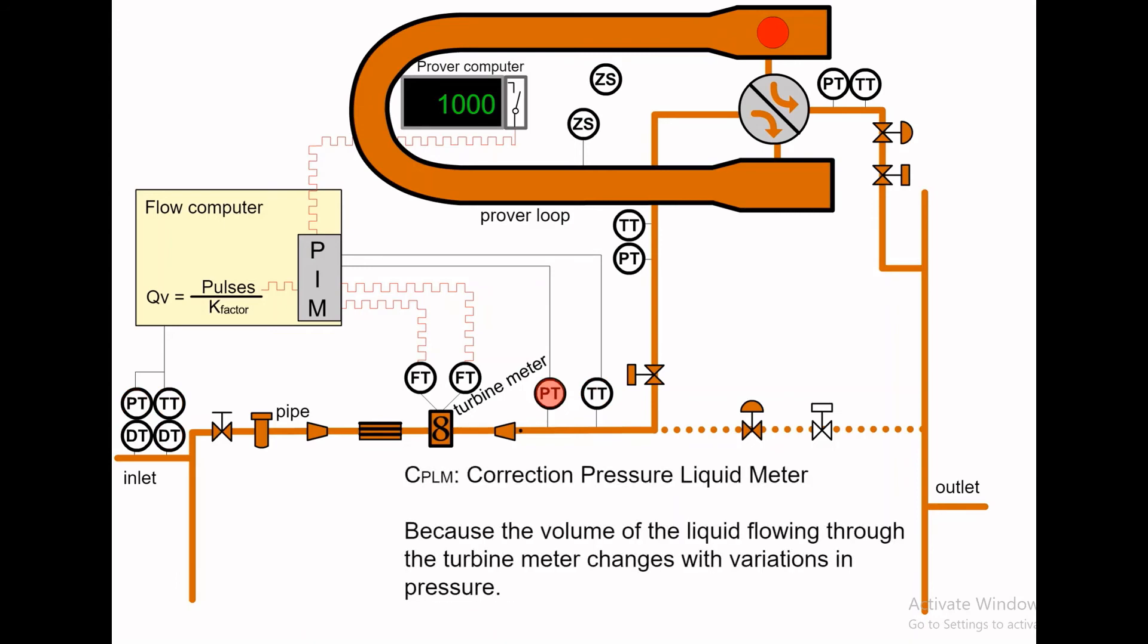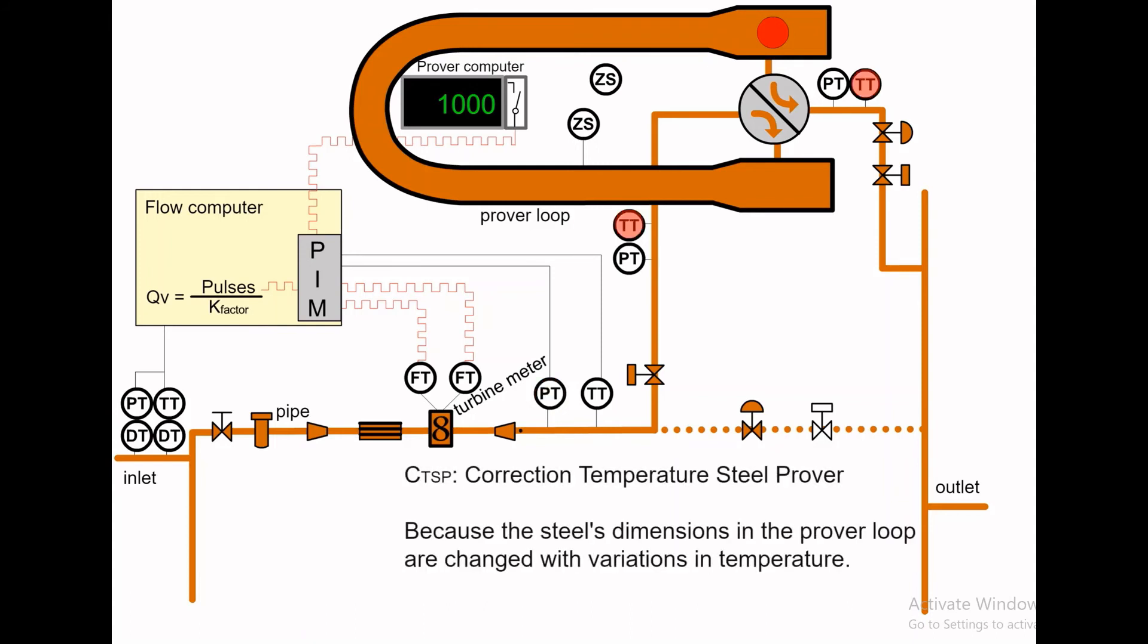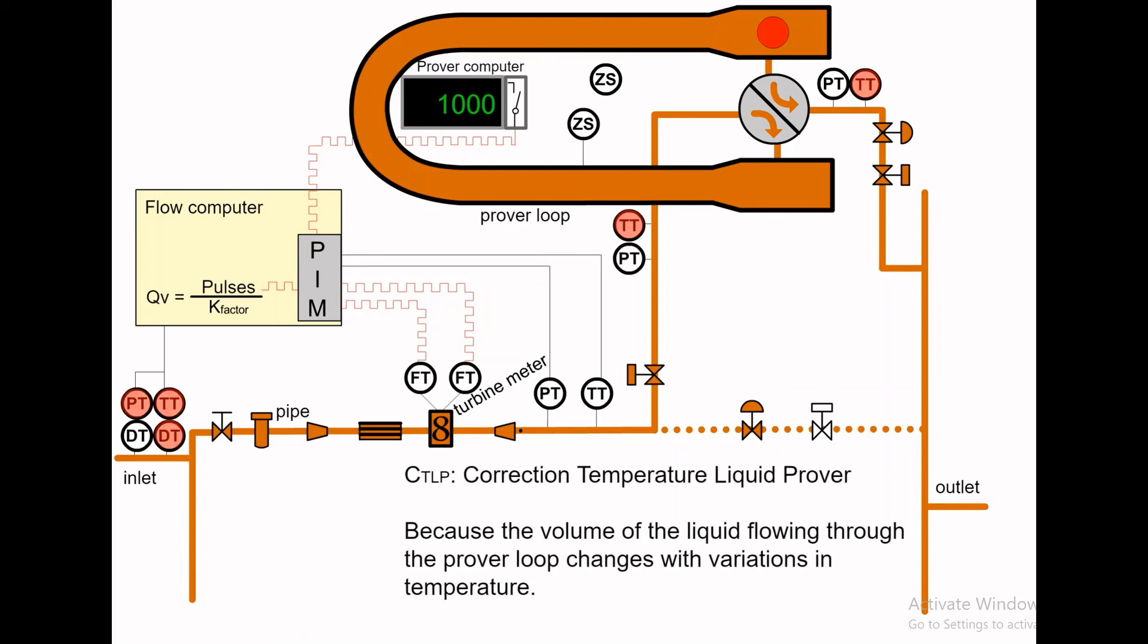CTSP, Correction Temperature Steel Prover, makes the correction required because the steel's dimensions in the prover loop are changed with variations in temperature. CPSP, Correction Pressure Steel Prover, makes the correction required because the steel's dimensions in the prover loop are changed with variations in pressure.